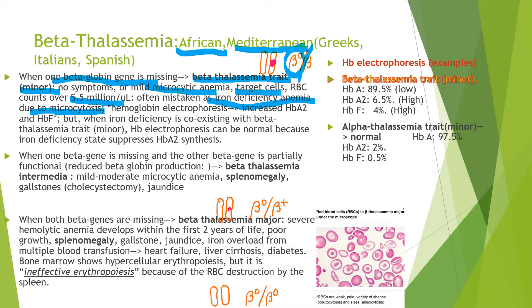There is a difference between alpha and beta thalassemia trait on hemoglobin electrophoresis. In beta thalassemia trait, it shows an increased level of hemoglobin A2 and hemoglobin F, but in alpha thalassemia trait, it is normal. There is one exception: when iron deficiency coexists with beta thalassemia trait, the hemoglobin electrophoresis can be normal because iron deficiency suppresses hemoglobin A2 synthesis. Therefore, you must correct the iron deficiency before ordering hemoglobin electrophoresis.